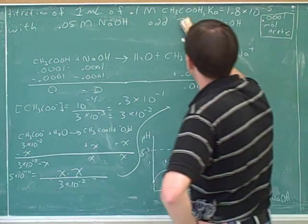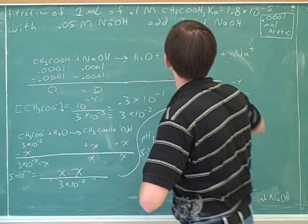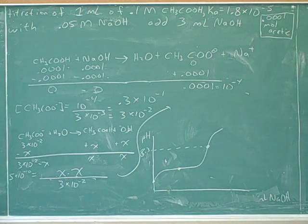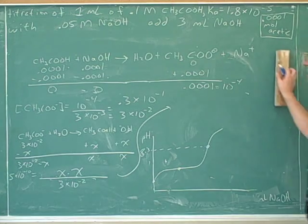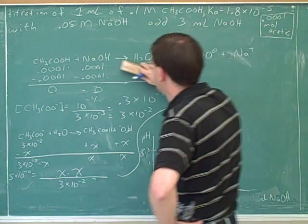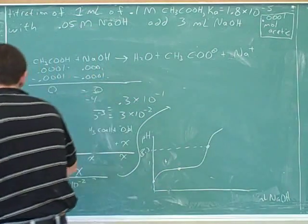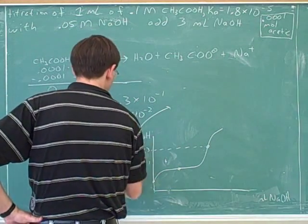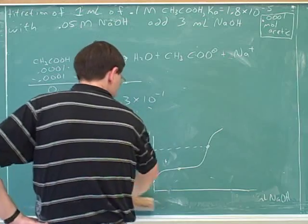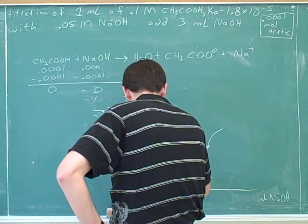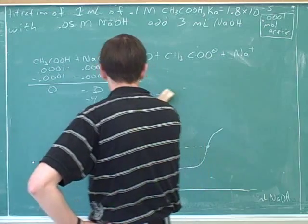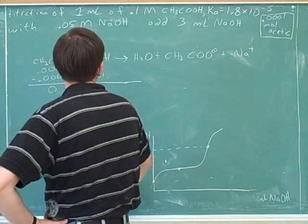So I guess the last thing to do would be three milliliters of sodium hydroxide. So let's see how we would work that out. All right, so we'll just see what we're doing. So I have to put in some more of it, so 0.0001, that's it.